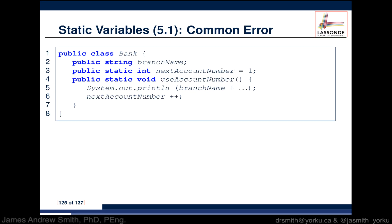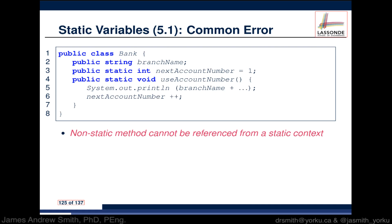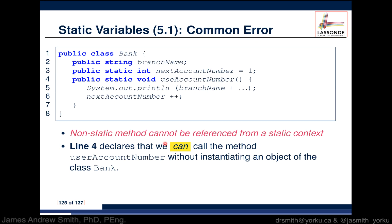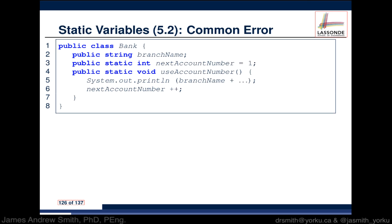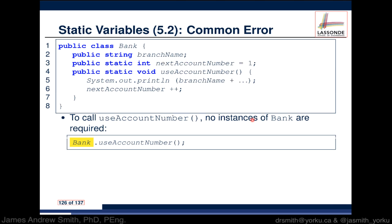Here's another example with a Bank class. The Bank has a branchName and a nextAccountNumber, and a method useAccountNumber that prints and increments nextAccountNumber. The issue is that nextAccountNumber is declared as a static integer. We get an error: non-static methods cannot be referenced from a static context. The static method useAccountNumber can be called without instantiating a Bank object, but inside it references branchName, which is a non-static attribute that requires an instance.